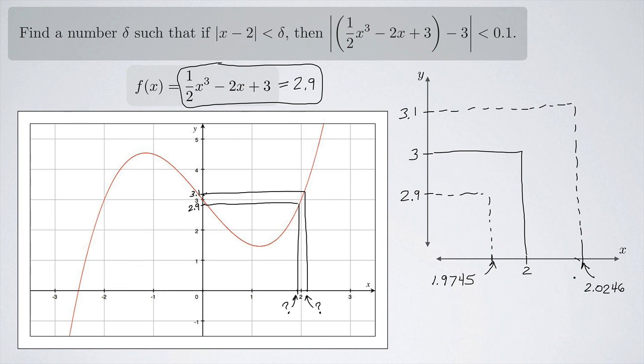And so now I want to find the delta that's appropriate here, and I would like to have maybe a symmetric interval around 2 for my delta. That way I don't have to worry about an unequal sized interval on either side here. Because remember, I just want one number delta. I want the distance between x and 2 to be less than just one number. And so I'll pick the smaller of the two.